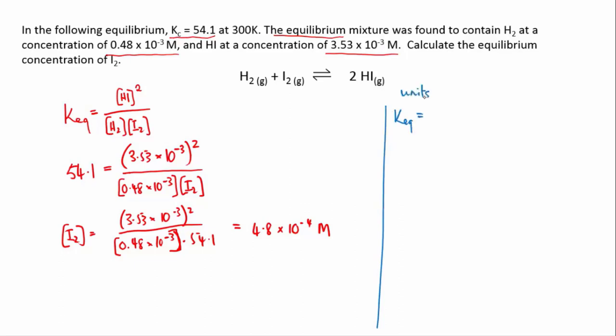So we've got concentration squared on the top, so it's going to be moles per liter times moles per liter times moles per liter.